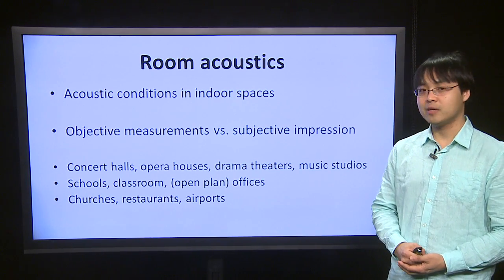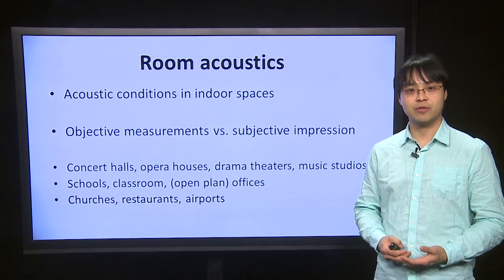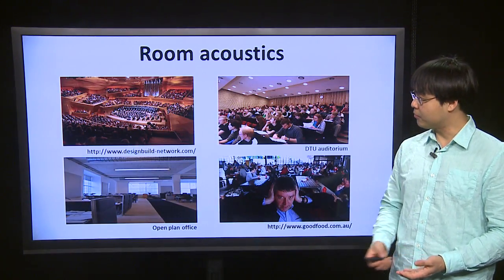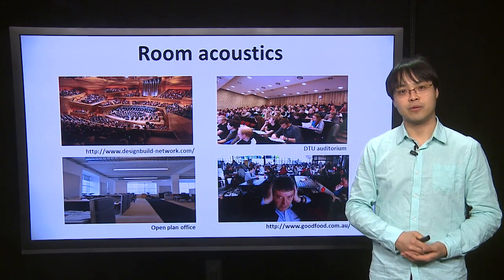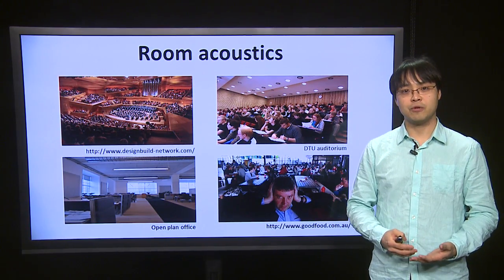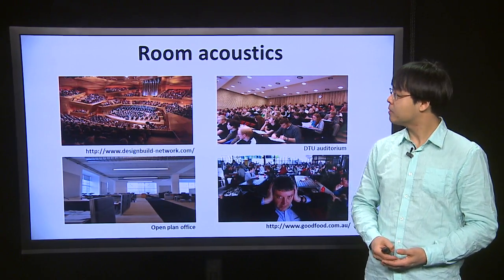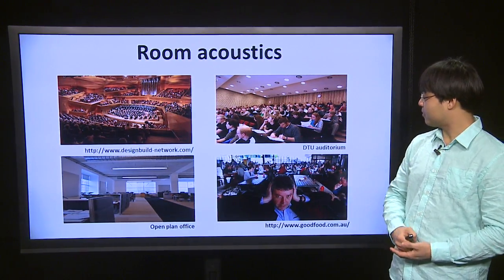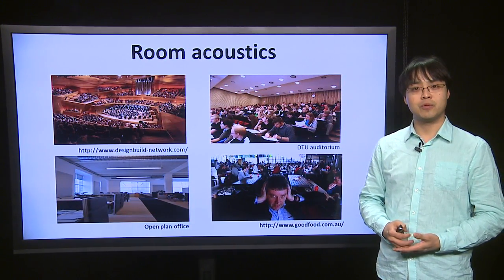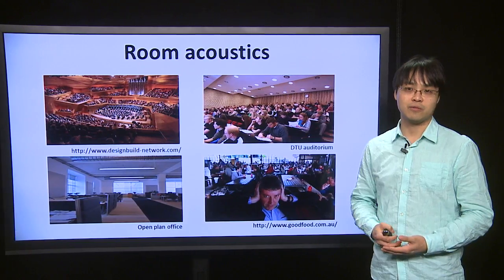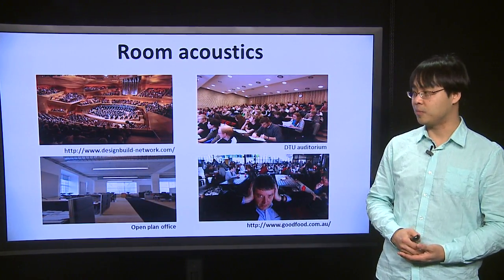In room acoustics we are dealing with different places like music performance spaces, schools, and restaurants. The first example shows the Danish Radio Concert Hall. Room acoustics is definitely most crucial in concert halls and opera houses. The second place is a classroom, where speech intelligibility is one of the most important parameters, because students want to hear the teacher as clearly as possible.